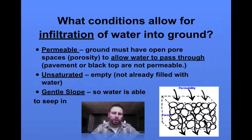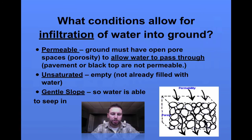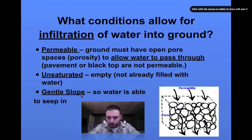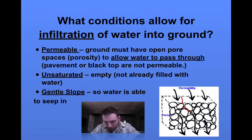Also, some more conditions that allow for infiltration: it has to be unsaturated. So if there's no water in the ground, the water can actually go in a little bit easier. Or a gentle slope will allow for higher rates of infiltration. With the diagram to the right here, you can see these areas where water can go in and move through — this is going to be considered permeable, and eventually the water moves out.